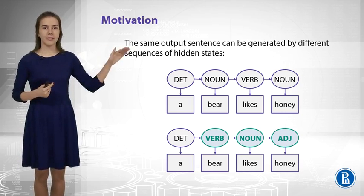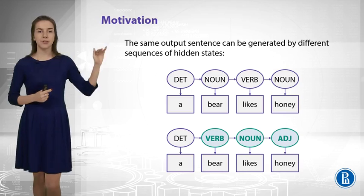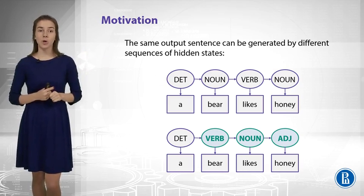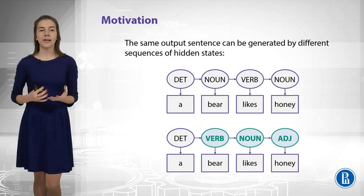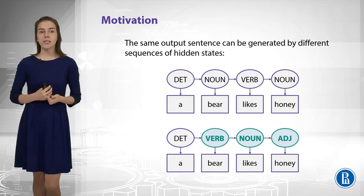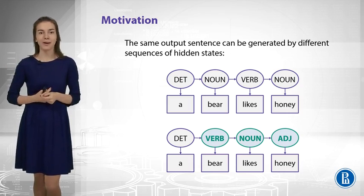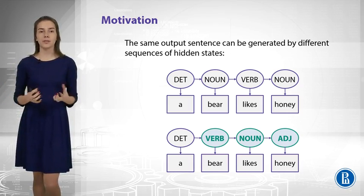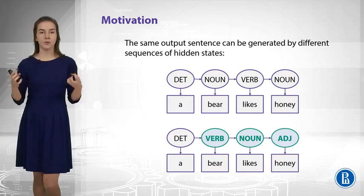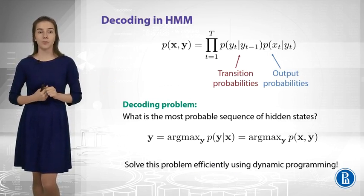For example, you can see a sequence of words 'a bear likes honey', and you can see that it can be decoded in different ways. The sequence of tags in the top and in the bottom of the slides are both valid, so both sequences could generate this piece of text. This is because we have very ambiguous language. For example, 'likes' can be noun or verb or something else. Okay, then how can we generate the most probable sequence of tags given a piece of text? This is called the decoding problem, and this is formalized in the bottom of the slide.